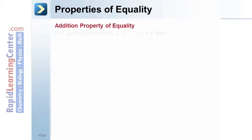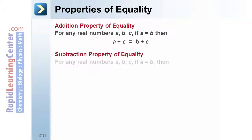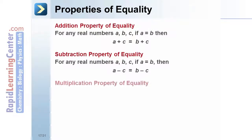Properties of equality. Addition property of equality: for any real numbers a, b, and c, if a equals b, then a plus c equals b plus c. Subtraction property of equality: for any real numbers a, b, and c, if a equals b, then a minus c equals b minus c.